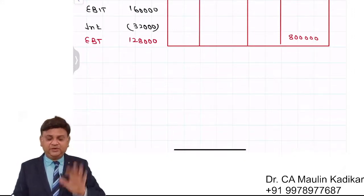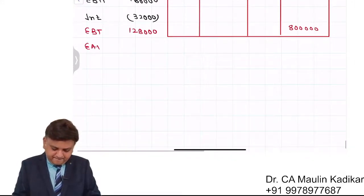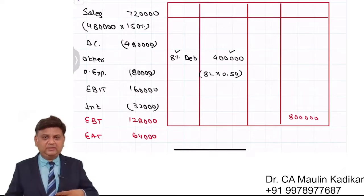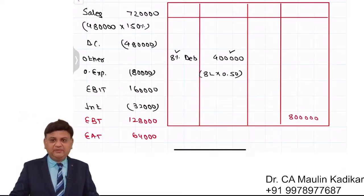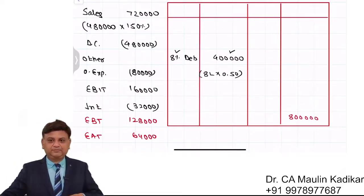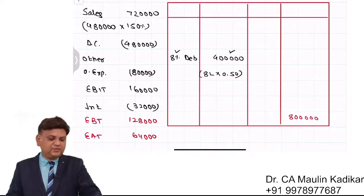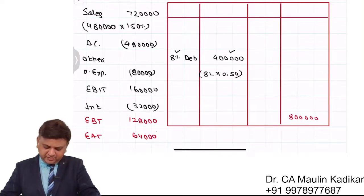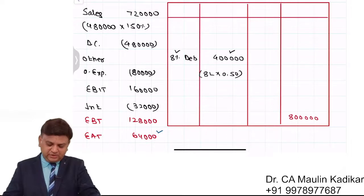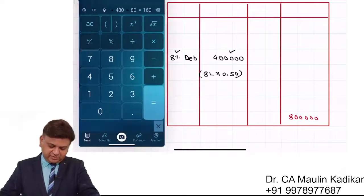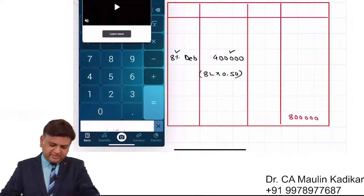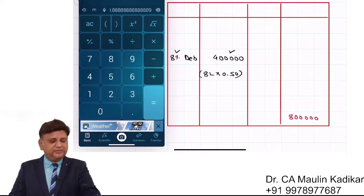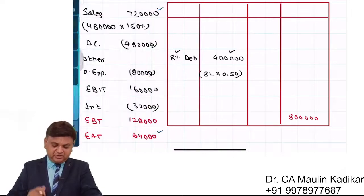Income tax rate is 50%, so earning after taxes is Rs 64,000. Now going one by one with the questions: the first question is what is the net profit ratio. Net profit is Rs 64,000 divided by sales Rs 7 lakhs 20,000 into 100. That comes to 8.89%. That is the first question answer.